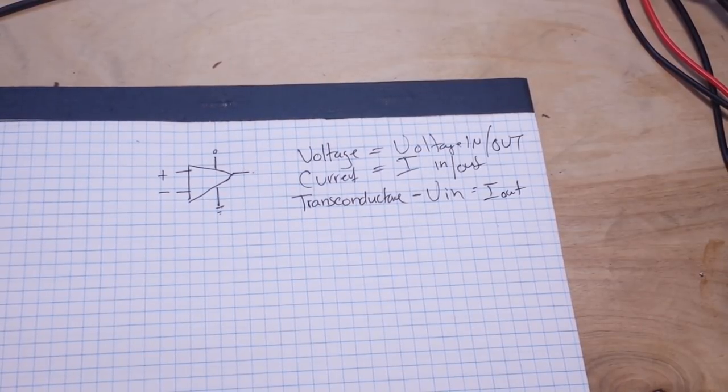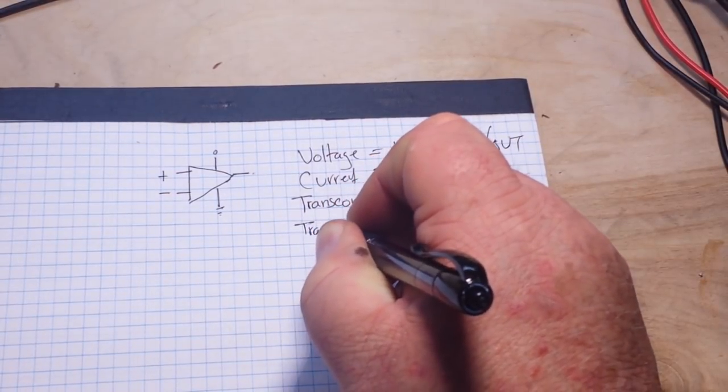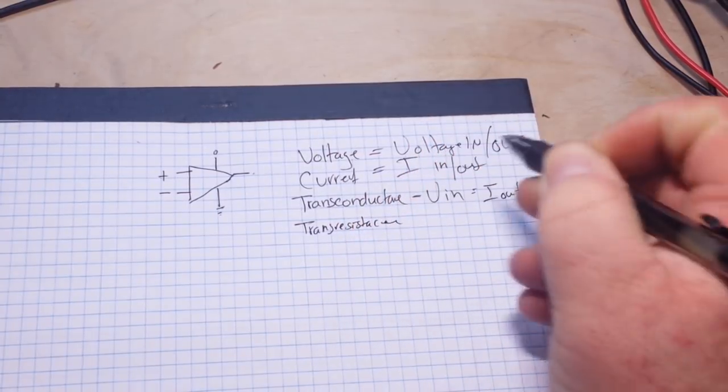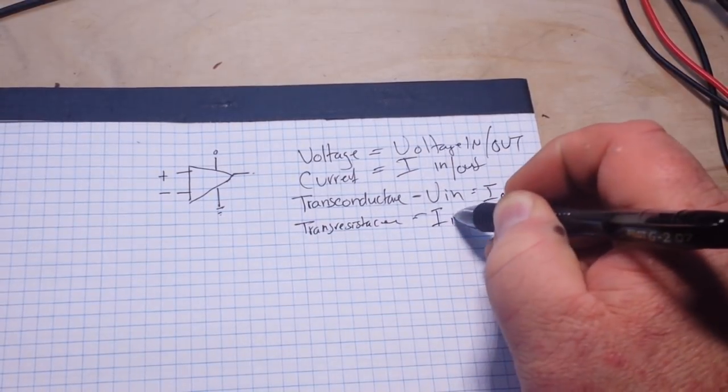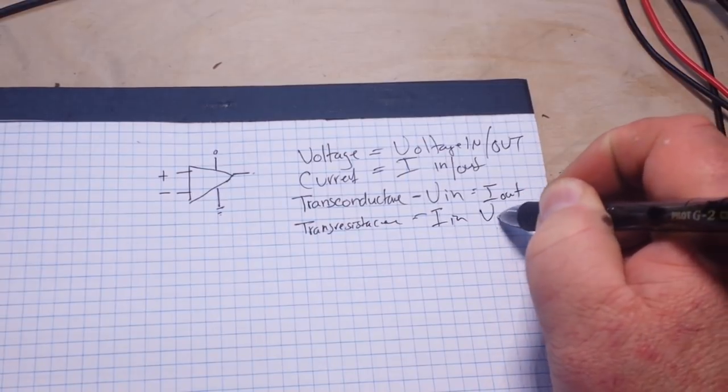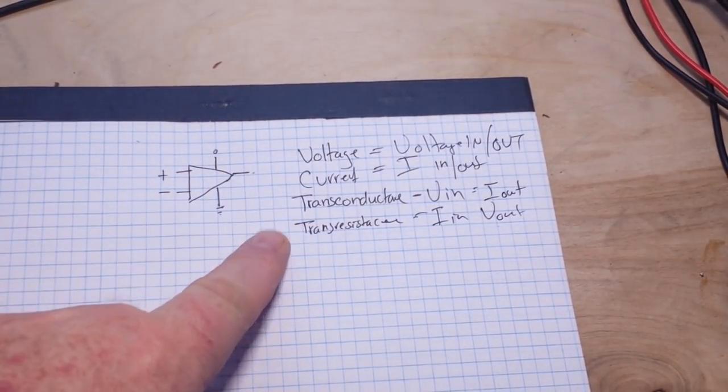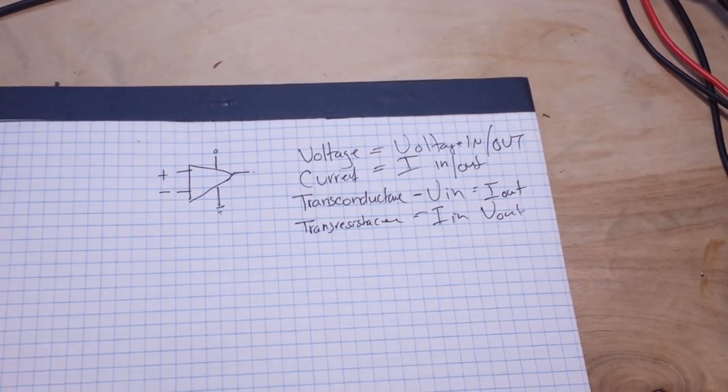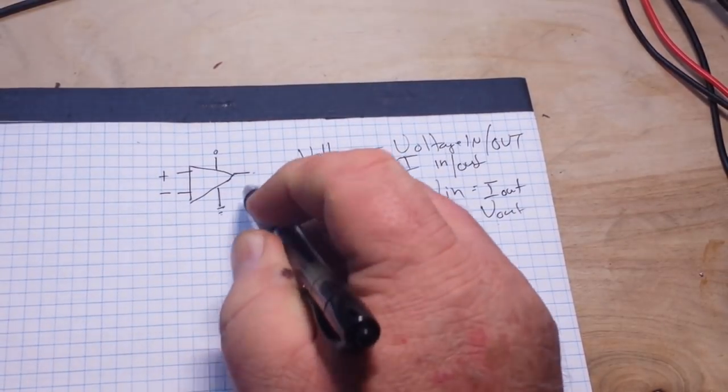I know that's a new concept for you guys just getting started, but that's okay, you don't have to memorize it today. And then we also have transresistance. Who knows what that one is? Well, it's the opposite - it's current in, voltage out. So those are our four possibilities of amplification for the op amp.